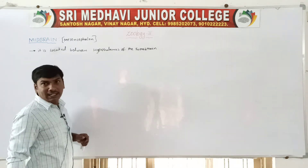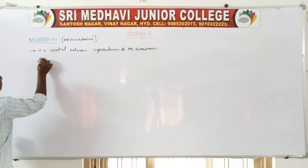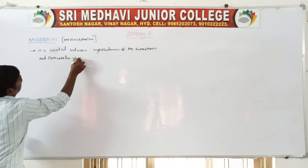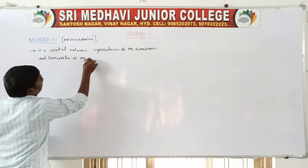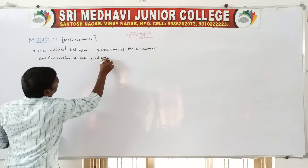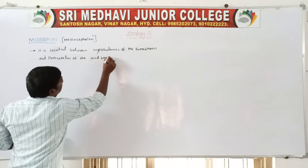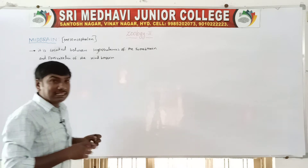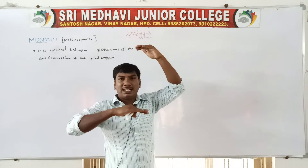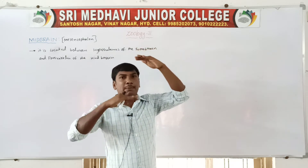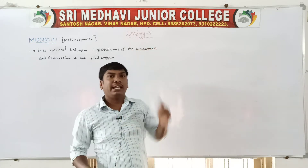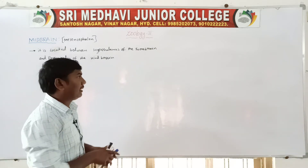The midbrain is located between the hypothalamus of the forebrain and pons varolii of the hindbrain. So the midbrain is located between the hypothalamus and pons varolii — hypothalamus is the forebrain and pons varolii is the hindbrain.